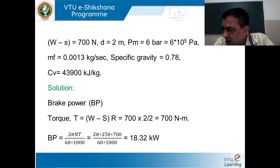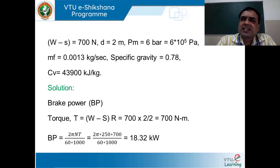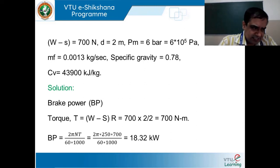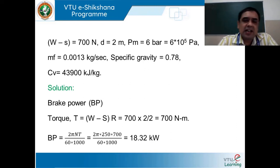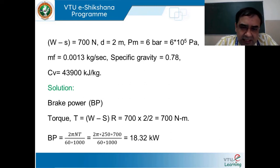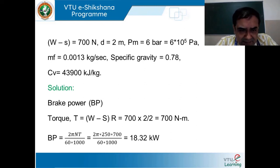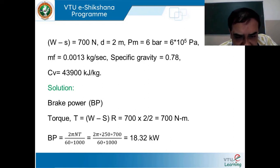While solving, we should be aware of the nomenclature. W is the load acting on the brake drum — normally a dynamometer is employed to determine the torque, for which a brake drum is used. W − S: W is the load acting on the brake drum, S is the spring balance reading. 700 Newton. Cylinder bore and PM = 6 bar = 600 kPa. MF = 0.0013 kg per second. Specific gravity = 0.78. CV = 43,900 kJ per kg.